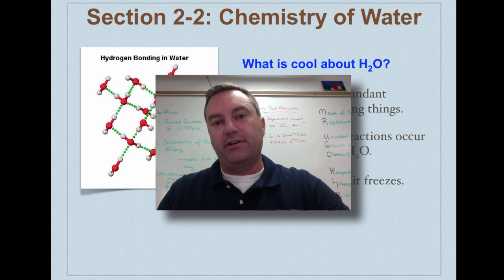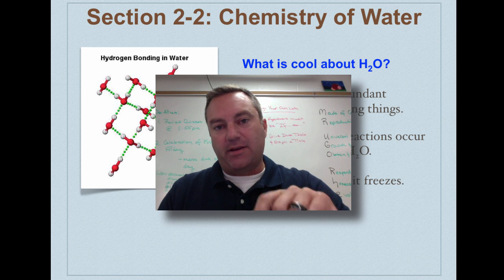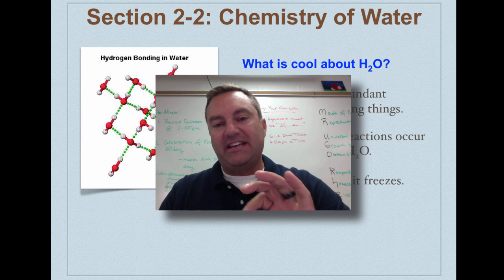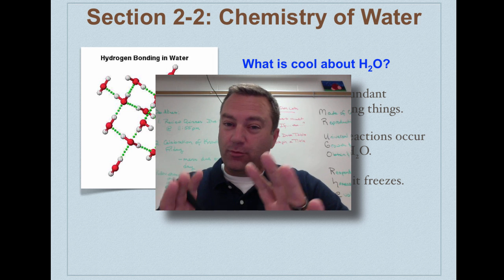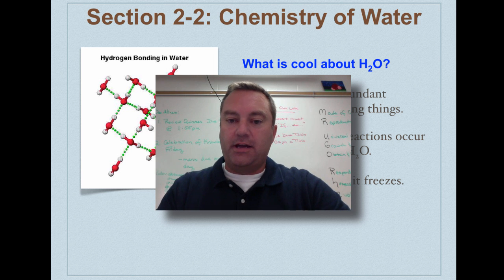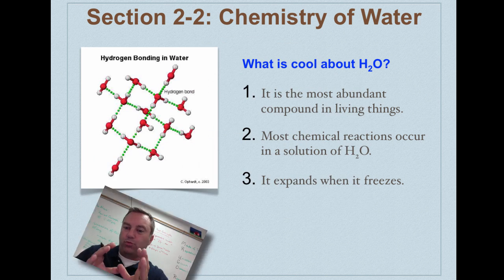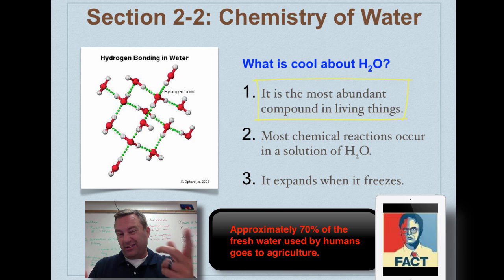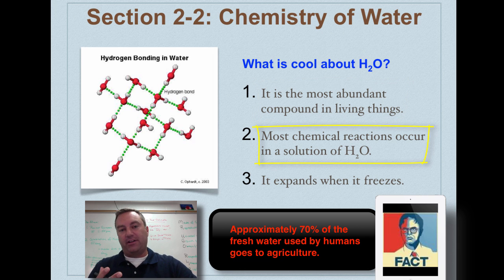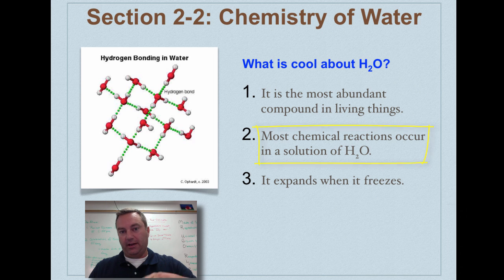Welcome to episode 3 of this series. In this episode we're going to talk about the really neat features of water, particularly polarity. What's really neat about water is: A, it's the most abundant compound found in living things — 80% of your body is going to be water. Two, every chemical reaction that occurs in a living thing occurs in a solution of water, and we're going to learn why water is really good at dissolving things.